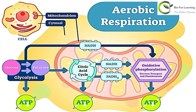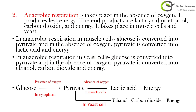This process happens in the mitochondria via the citric acid cycle and oxidative phosphorylation. You just need to remember that glucose converts to pyruvate in the cytoplasm, and from pyruvate, carbon dioxide, water, and energy are released in the mitochondria. The second type of respiration is anaerobic respiration.